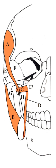Primary maxillary spaces include the canine space, buccal space, and infratemporal space. Primary mandibular spaces include the submental space, buccal space, submandibular space, sublingual space, and submasseteric space. Secondary spaces include the cervical spaces.